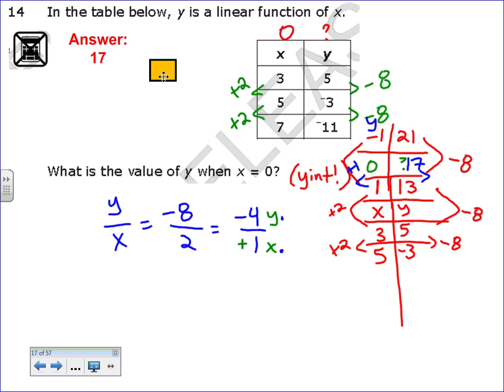Another option, if this was confusing for you, is you could always graph these points by using your x and y. You could say, at 3, if I go over 3 and up 5, and if I go over 5 and then I'm at down 3, and 7 I'm down negative 11. And then you could graph them and use your slope to work backwards until you saw where it crossed the y-intercept. If you don't like doing this, graph these points and work backwards to see where it's going to cross the y-axis.